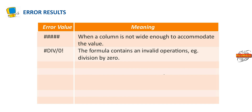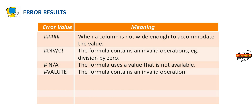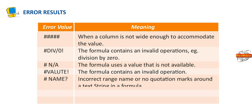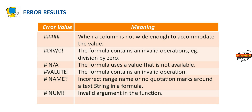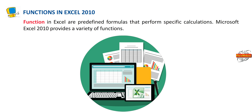#DIV/0! — the formula contains an invalid operation, for example, division by zero. #N/A — the formula uses a value that is not available. #VALUE! — the formula contains an invalid operation. #NAME? — incorrect range name or no quotation marks around a text string in a formula. #NUM! — invalid argument in the function. #REF! — invalid cell reference.